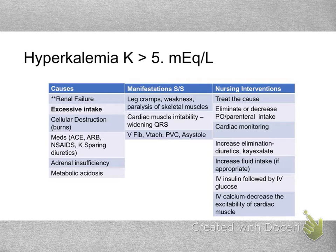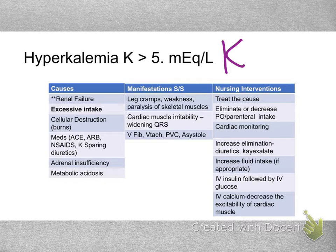Potassium is one of the most important electrolytes — especially from a cardiac nursing perspective. I always try to remember that K kills: your potassium, if it's too low or too high, can kill you. It has a small range of 3.5 to 5, which is much smaller than sodium's ten-point span.